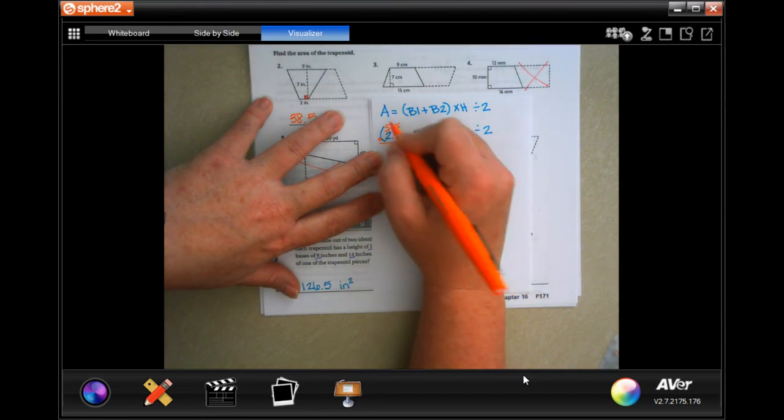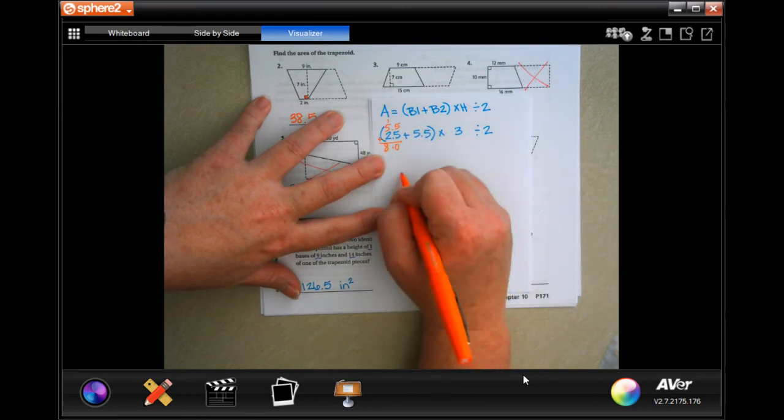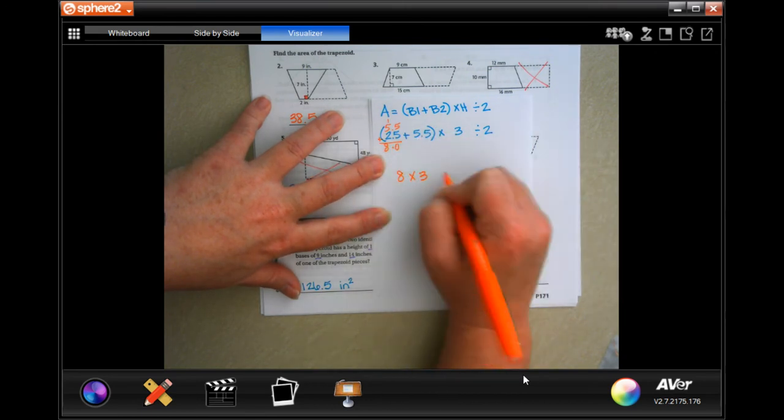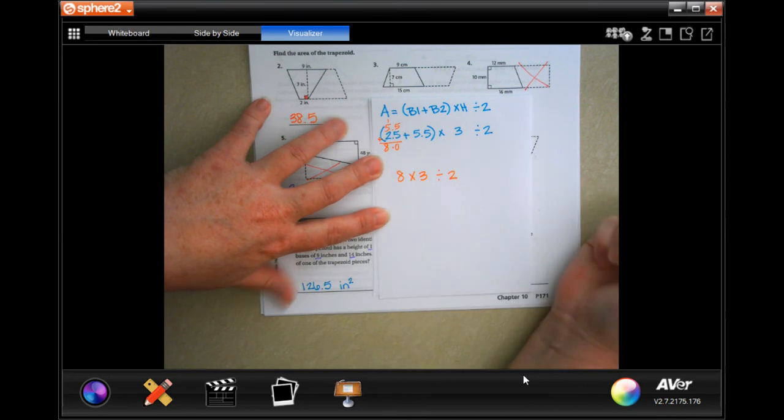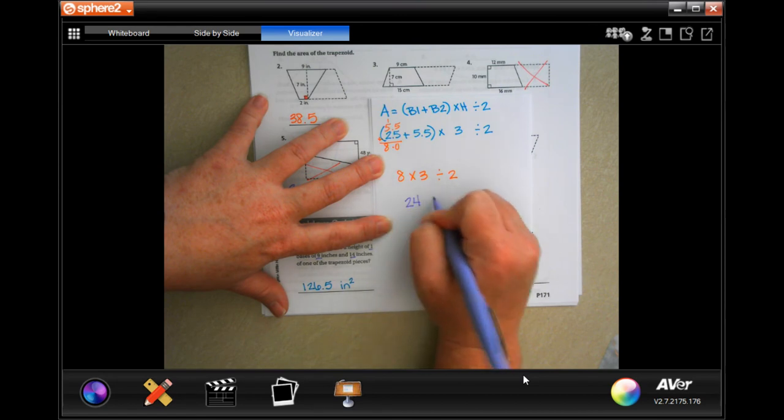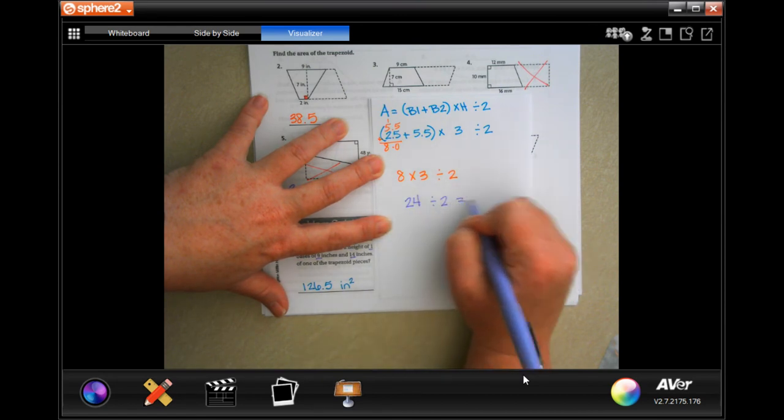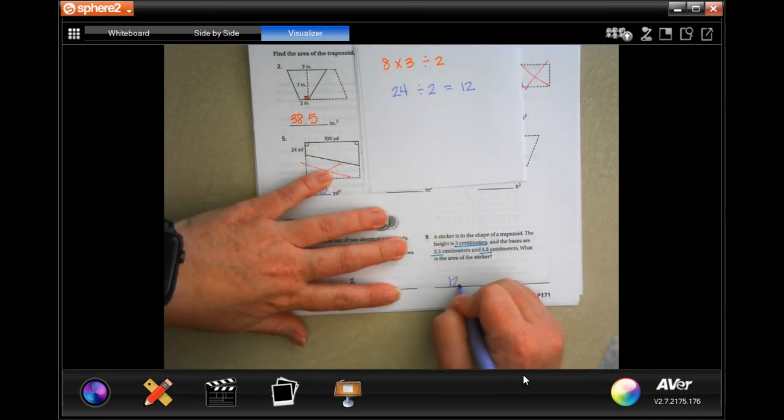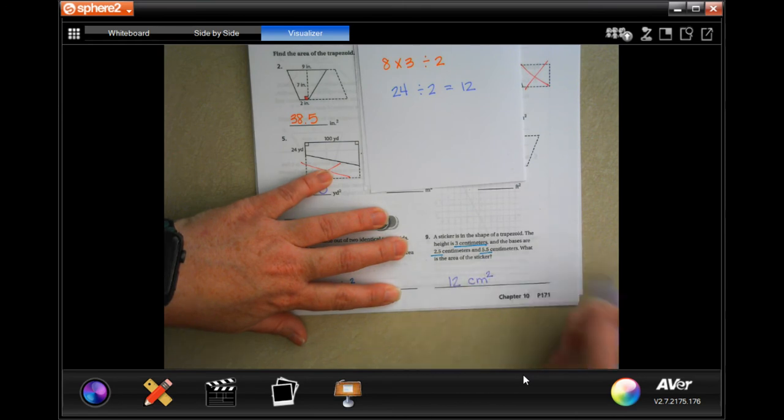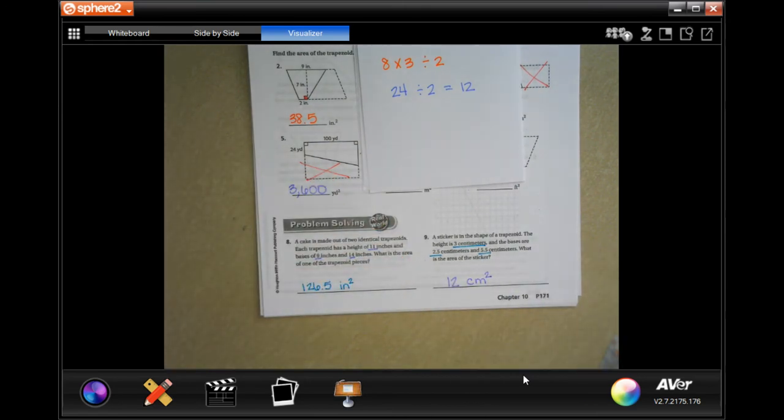So that's going to be a 0, carry the 1, that's going to be an 8, so 8 times 3 divided by 2. Well, 8 times 3 is 24, and if we split 24 in half, which is dividing it by 2, we get 12. So 12 centimeters, and we multiplied centimeters by centimeters, so it's centimeters squared.